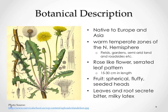Many people see dandelion as a perennial weed and spray it off from their lawns. Taraxacum officinale is native to Europe and Asia. It is widely distributed in warm temperate zones of the northern hemisphere, where you can find them in open fields, gardens, semi-arid land, and roadsides. As you can see from the picture on the left side, it has a rose-like flower pattern with serrated leaves. The name 'lion's tooth' came from the deep jagged shape of the leaves. The fruit refers to its spherical fluffy seeded heads at the top of the picture, which gives it another common name as the blow ball. The leaves and roots secrete bitter milky latex that has great medicinal properties.